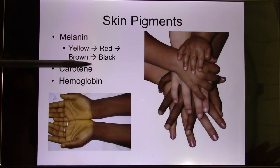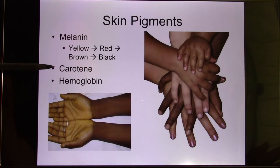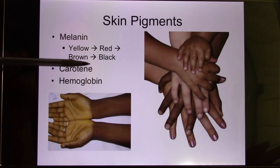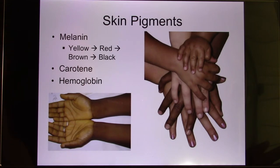The second pigment is carotene. Carotene is a pigment you can find in your food — carrot has a lot of it, and so does sweet potato. Usually it won't affect your skin tone too much unless you overconsume it. We do have cases of kids who ate nothing but carrots for two months and it affected their skin tone.